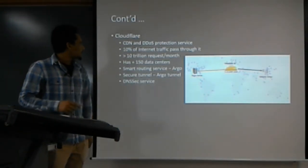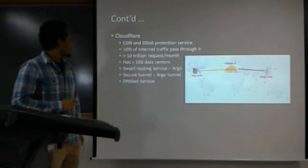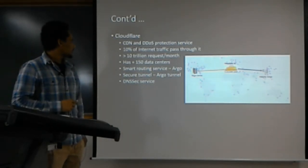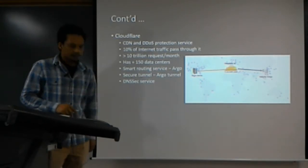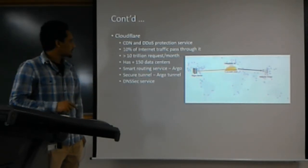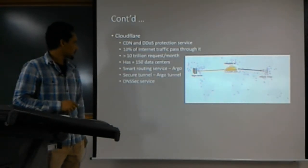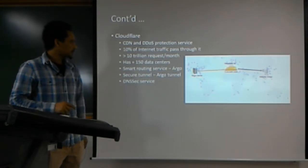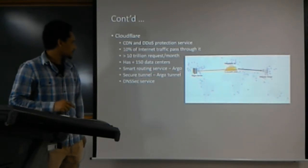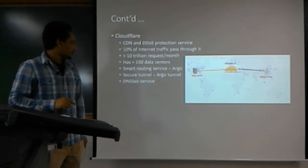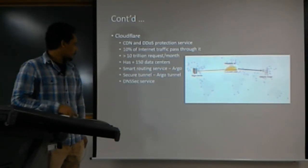Cloudflare is a US-based company popular for delivering content delivery networks and DDoS protections for web servers. About 10% of internet traffic passes through their cloud protection services. They have more than 150 data centers globally for speed-up service and DDoS protection. Recently, they have added smart routing services such as Argo, and on top of that, they deliver Argo Tunnel, a security service that protects origin servers even more.